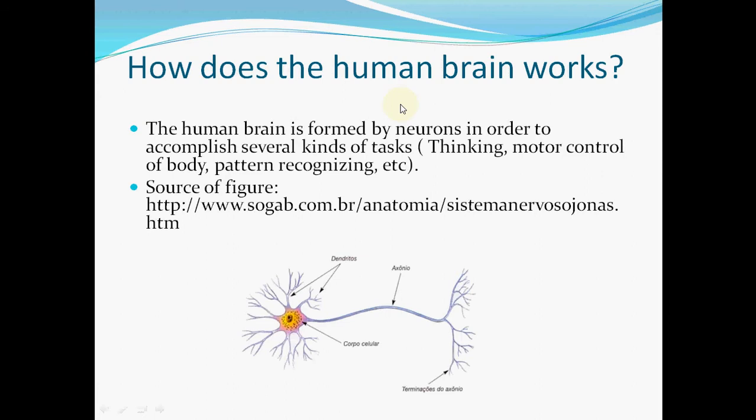First, how does the human brain work? The human brain is formed by neurons in order to accomplish several kinds of tasks — such as thinking, motor control, etc.